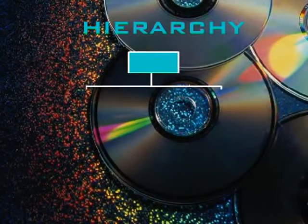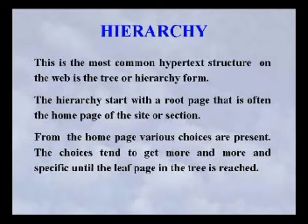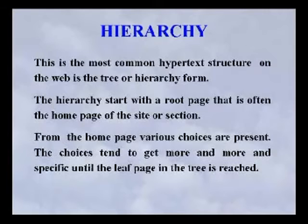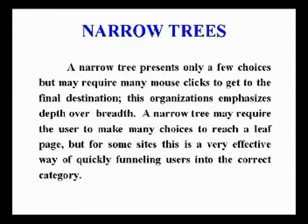Hierarchy organization. The most common hypertext structure on the web is the tree or hierarchy form. The hierarchy starts with the root page, often the home page of the site or section. From the home page, various choices are presented, getting more and more specific until the leaf page is reached. A narrow tree presents only a few choices but may require many mouse clicks to reach the final destination, emphasizing depth over breadth, though it can effectively funnel users into the correct category.